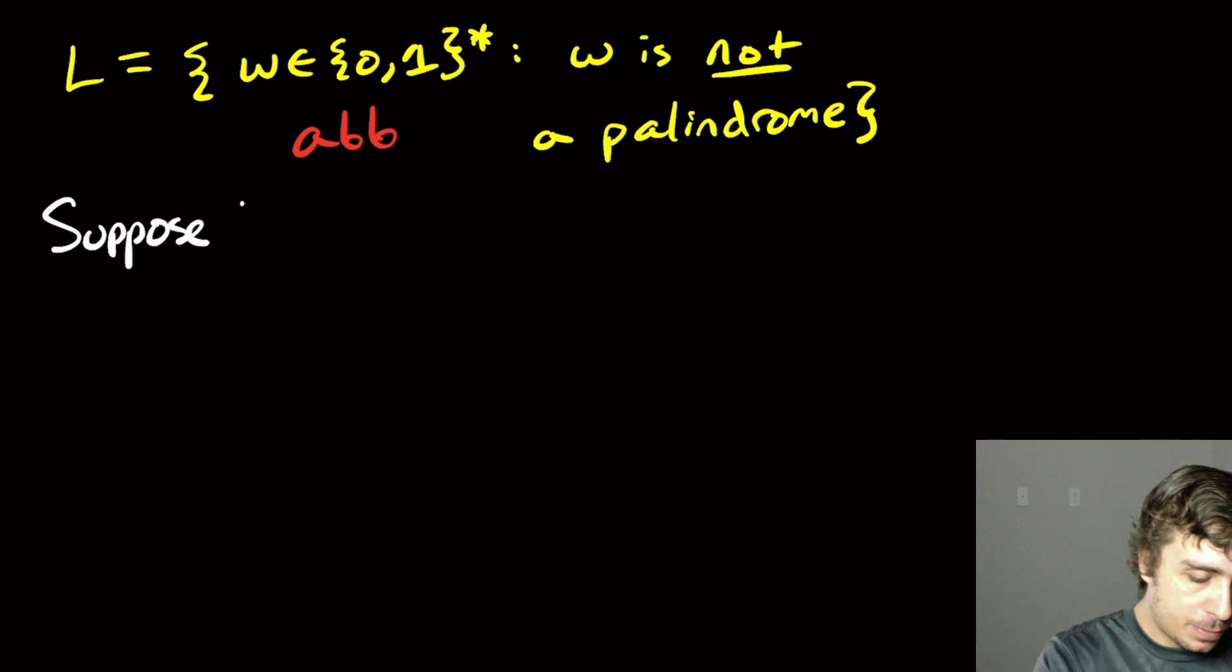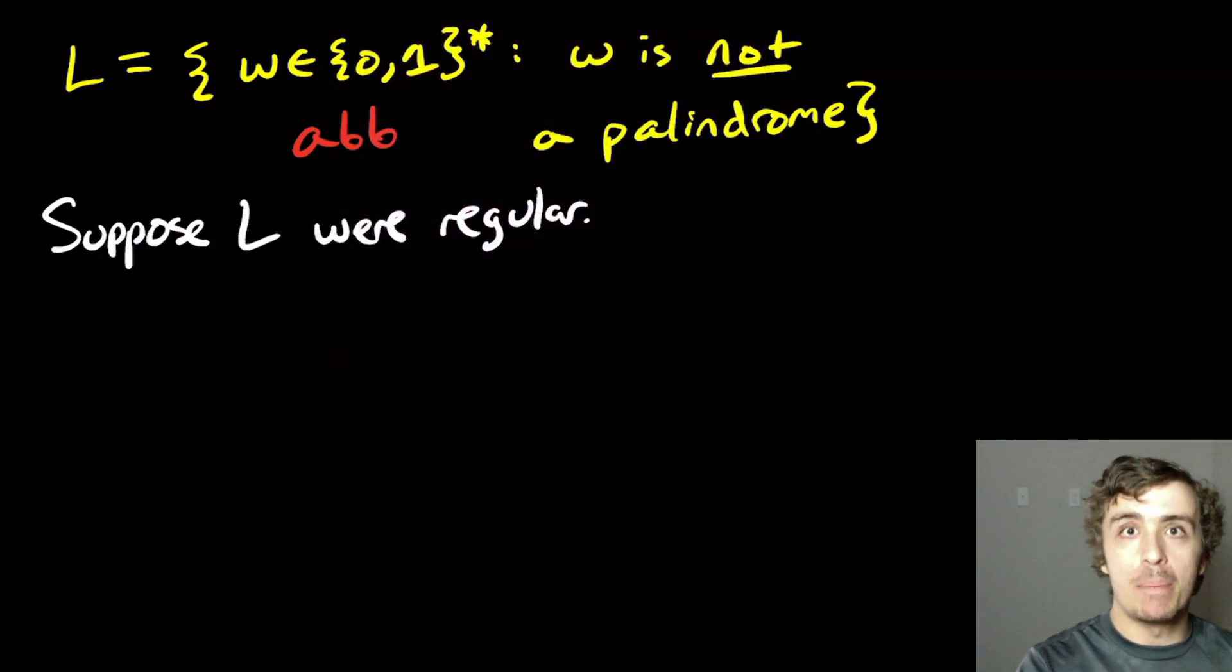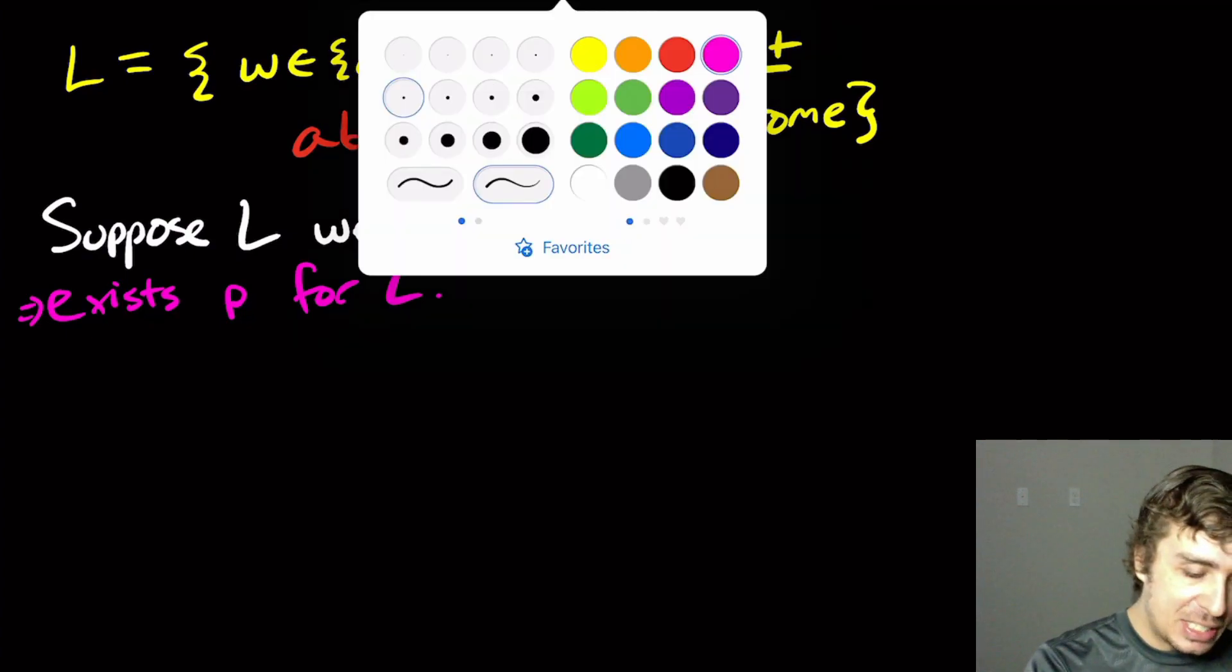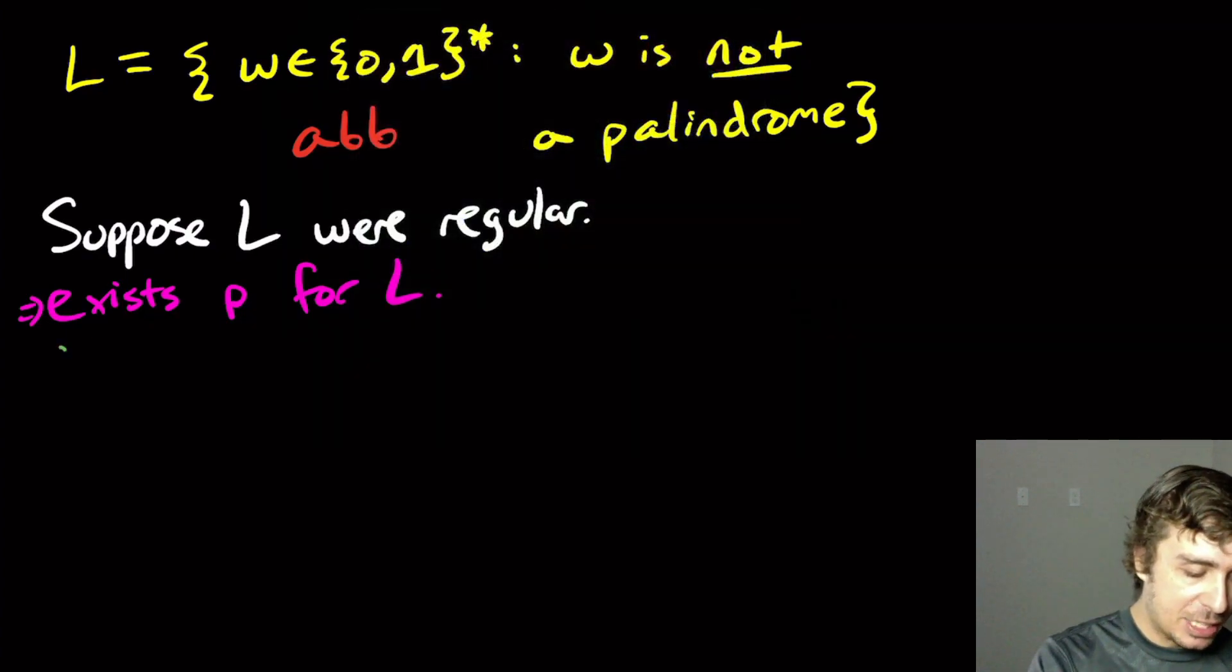So let's try to prove that this thing is not regular. So let's suppose L were regular. Then there exists a pumping constant P for L. So there exists some constant P for this language L.